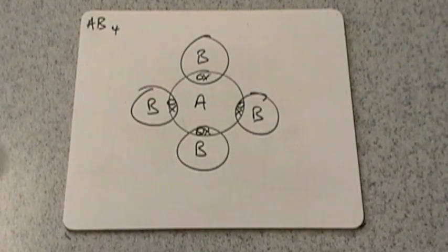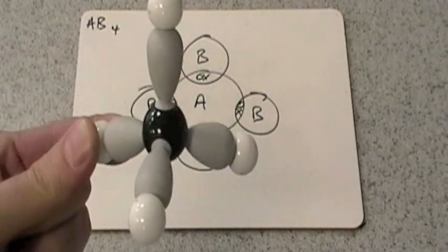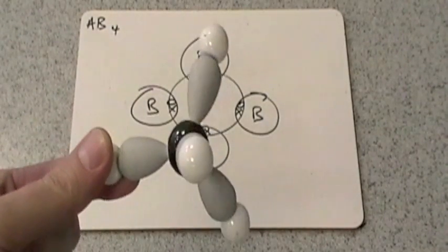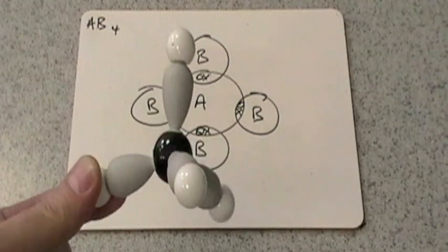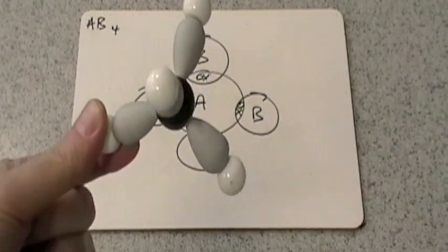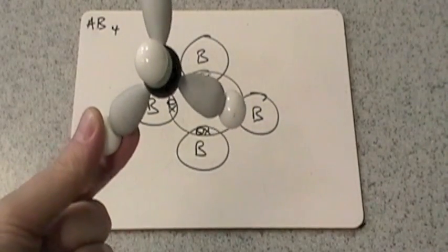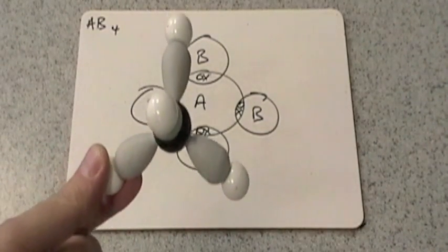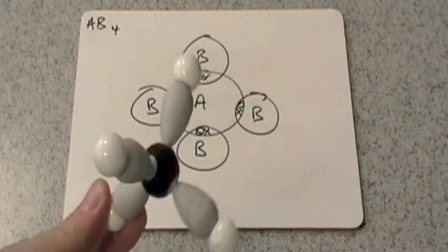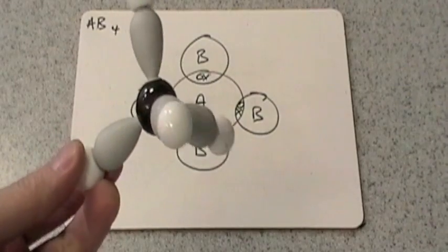I'll show you the model of it now. So that's it there. So you can see now, we only have two, two of the bonds are in the same plane. Those two there. The other two bonds are one sticking over to the right hand side and the other one sticking over to the left. So we're going to have to try and draw this. There's a nice easy way to do that, which I'll show you in a second.